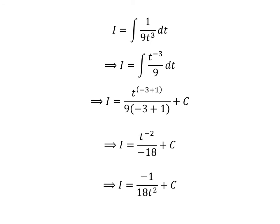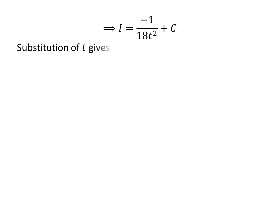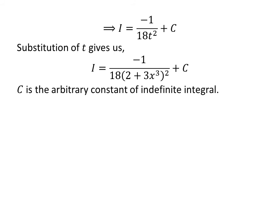Shifting the minus sign to the numerator and moving t^(−2) to the denominator gives us i equals minus 1 upon 18t², plus C. Let us substitute t back in terms of x. As we had assumed t equals 2 plus 3x³, so i equals minus 1 upon 18 times (2 plus 3x³)², plus capital C.